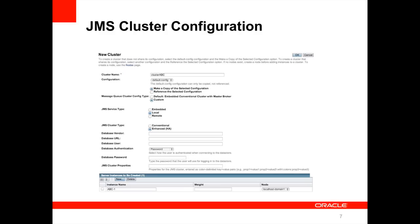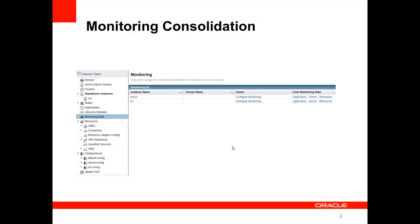We've added the ability to configure JMS clusters through the administration console. We've also consolidated all of our monitoring capabilities into the monitoring tab or monitoring tree node. If you go to the navigation tree, you now select monitoring data, and anything that GlassFish server can monitor you can now get to through this tab. That's mainly a usability and ease-of-use feature.